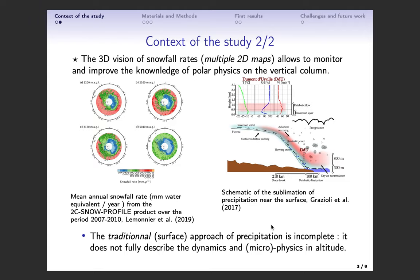This way, at each grid point of the Antarctic continent, we get the snowfall rate profile to analyse in this work. As you can see on the right side of the slide, the 3D view of snowfall can be related to other meteorological variables that are often studied along the vertical axis. More complete dynamics and microphysics in altitude could be understood this way.